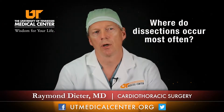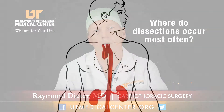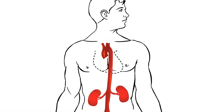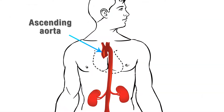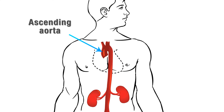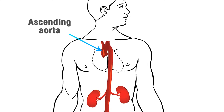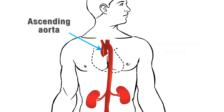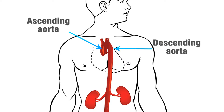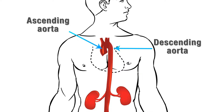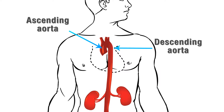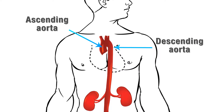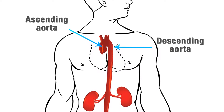Dissections usually occur in the aorta — usually either in the ascending aorta, which is the front or first part of the aorta, or in the descending thoracic aorta, which is where it turns and goes down along your spine to your back and into your abdomen.